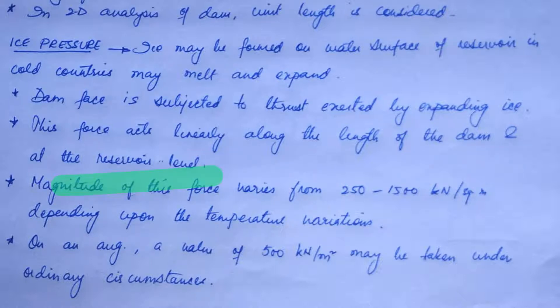The magnitude of this force normally varies from 250 to 1500 kN per square meter depending upon the temperature variations, and on an average we take a value of 500 kN per meter square under ordinary circumstances.